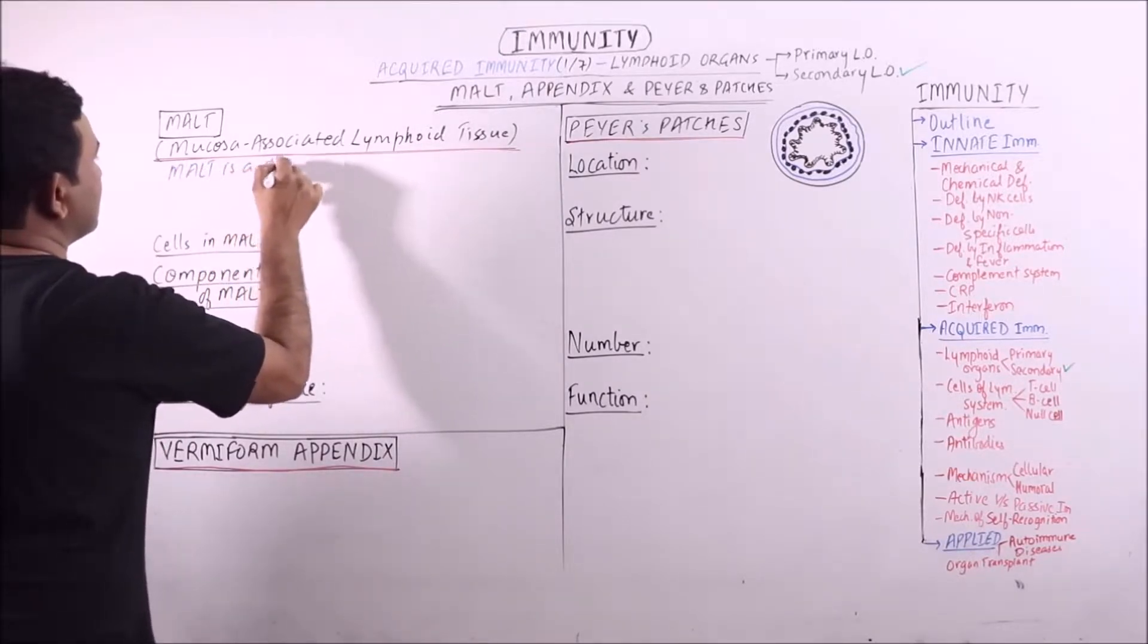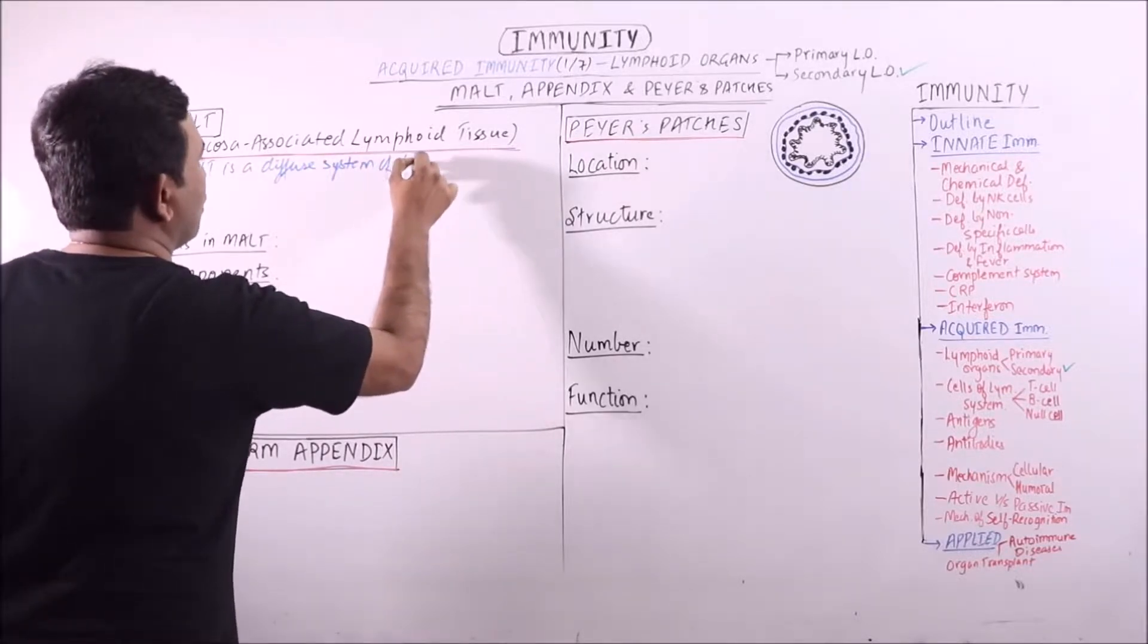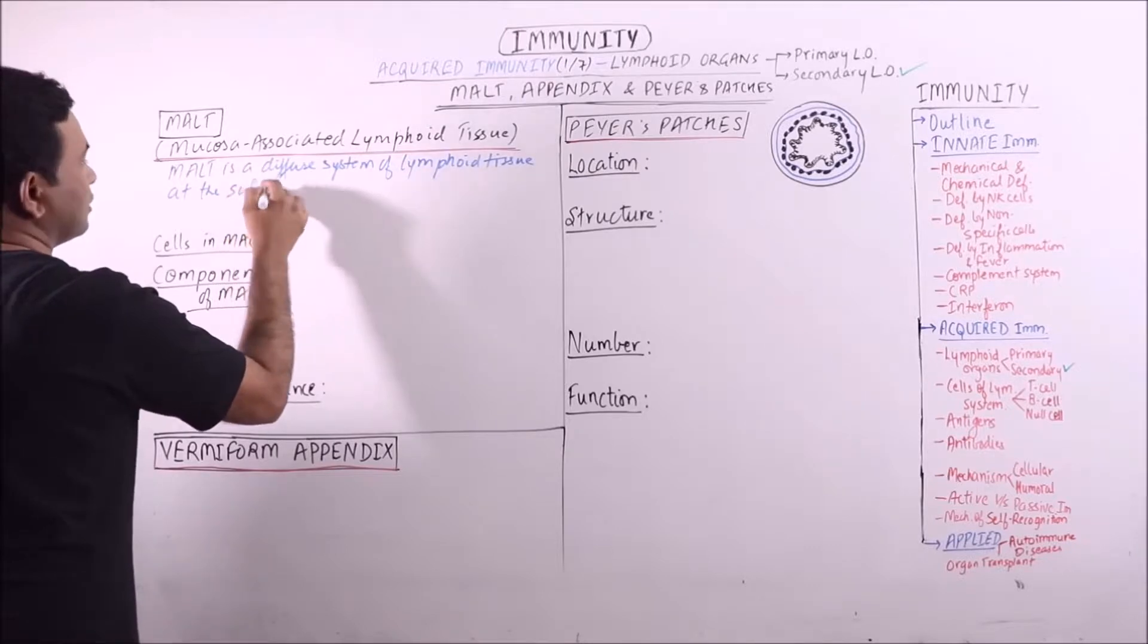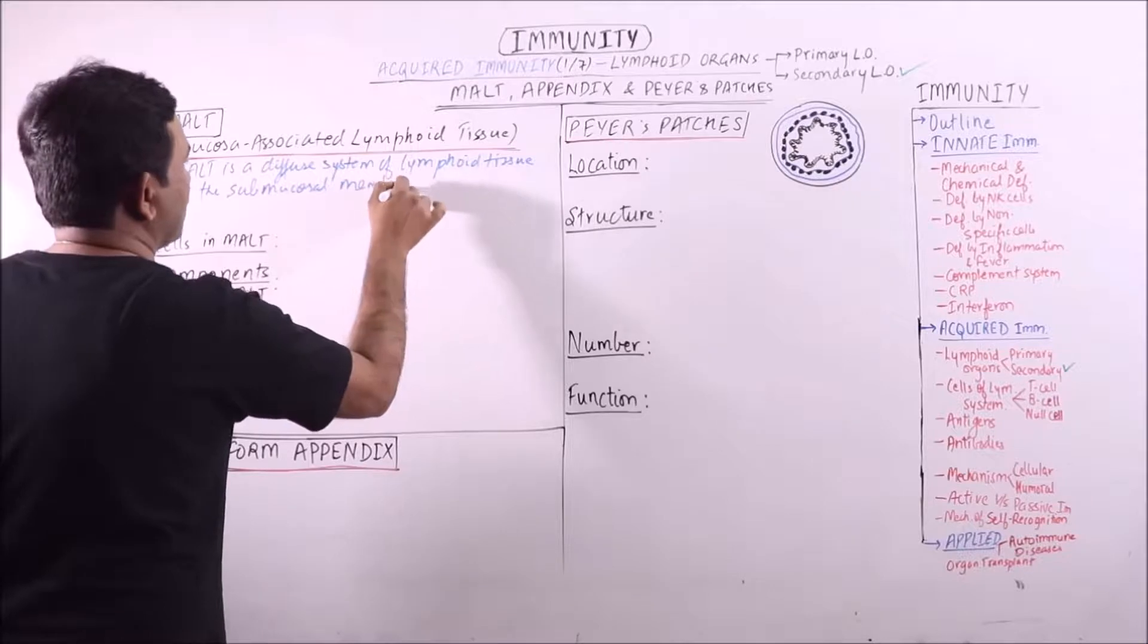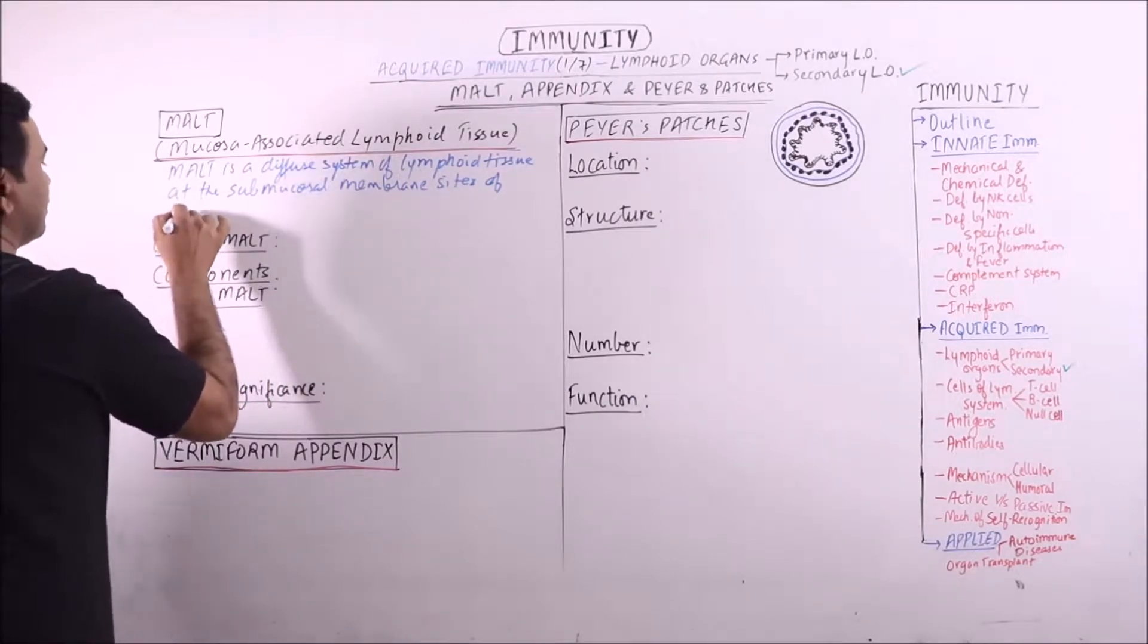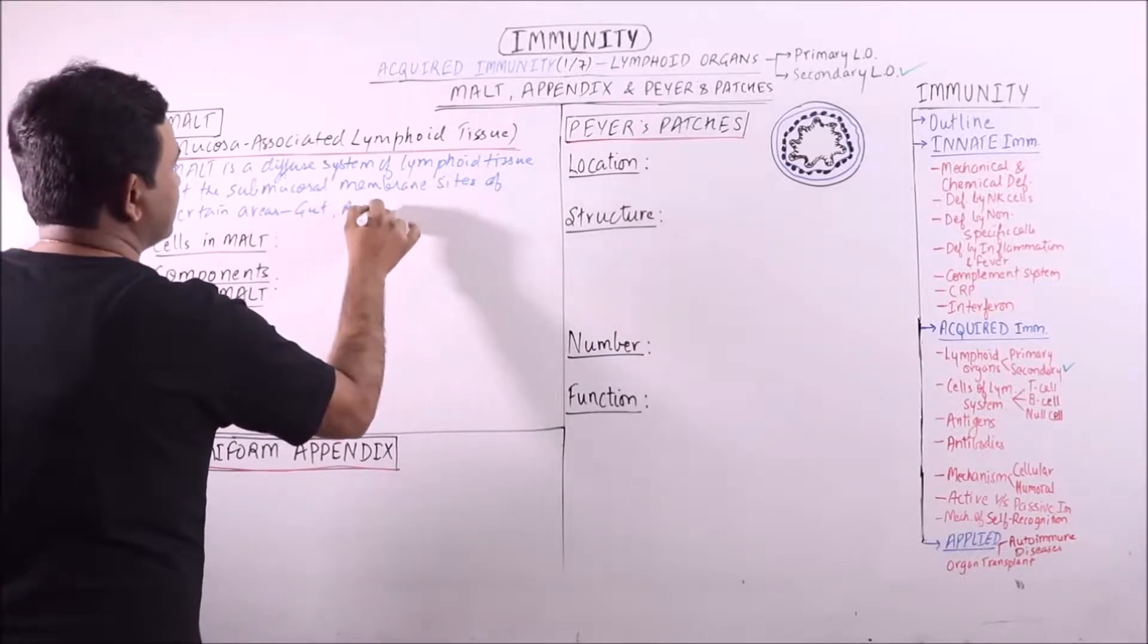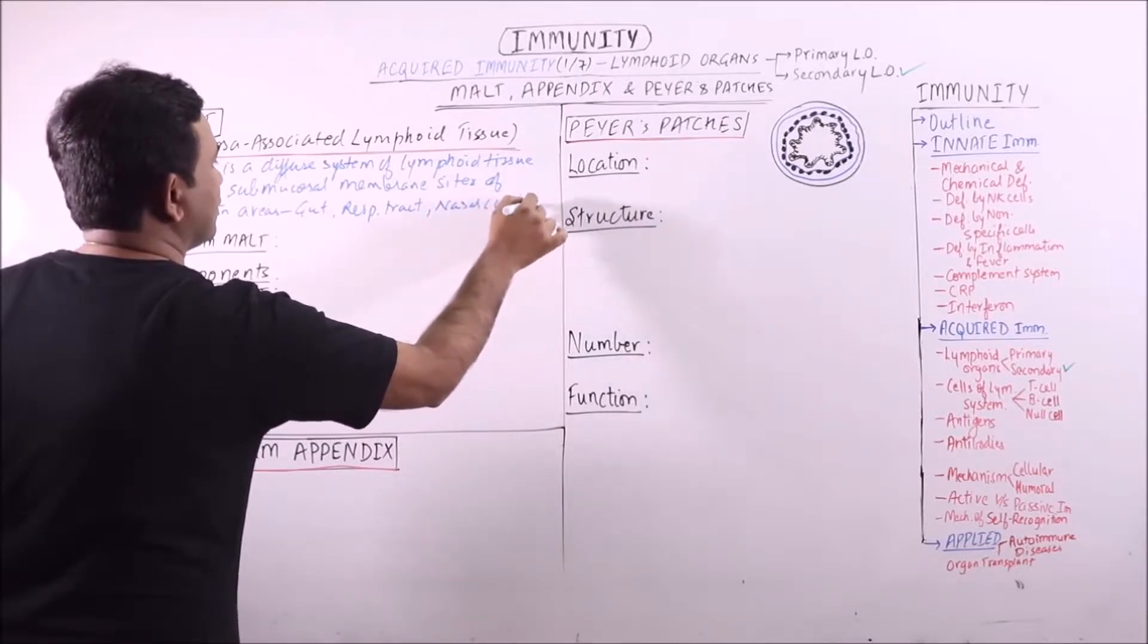MALT is a diffuse system of lymphoid tissue at the submucosal membrane sites of certain areas like gut, respiratory tract, nasal cavity, etc.